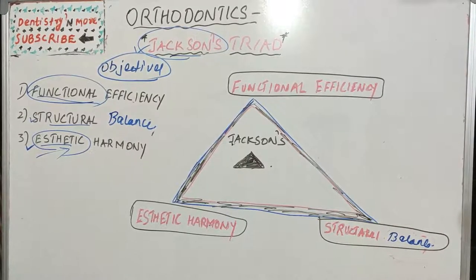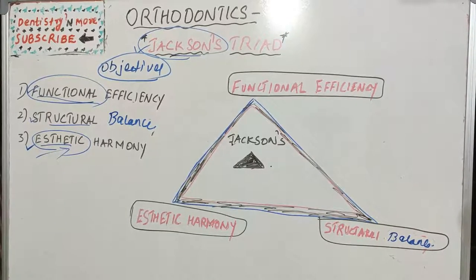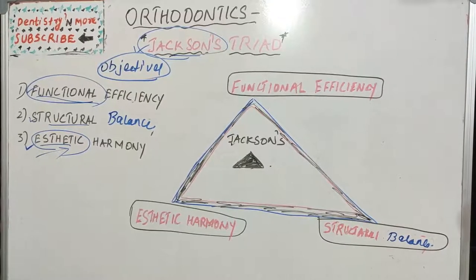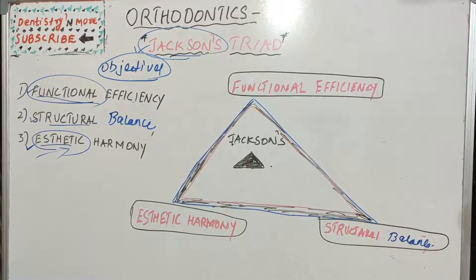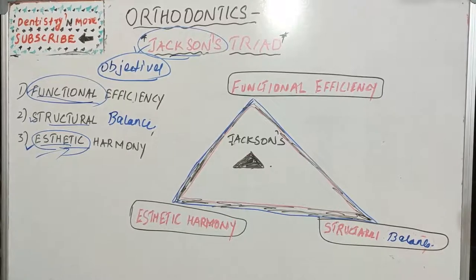Before moving to the triad, let's see the normal scenario. When a person goes to an orthodontist, it is mainly for an aesthetic concern — they might feel their teeth are more proclined, more rotated, or their jaws are more forwardly placed. Any such concern is mainly aesthetic, and that is why the patient seeks orthodontic correction.